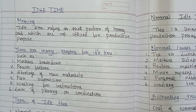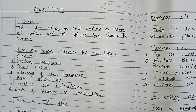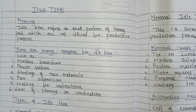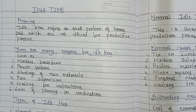Let's understand with a quick example. Imagine a factory where workers are present, but due to a power failure the machines are not running. The workers are still being paid but no work is happening because of the power failure. This is what is called idle time.